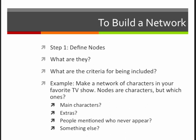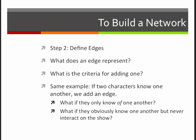Once you've decided who the nodes are, the next step is to define the edges. What does an edge represent? And what's the criteria for adding one? So if we continue with that same example of a TV show, we may want to add an edge if two characters know one another. But for example, what if they only know of one another? What if they're characters that are in two different parts of the show and they never interact with each other, they never actually meet, but they do know that each other exists?